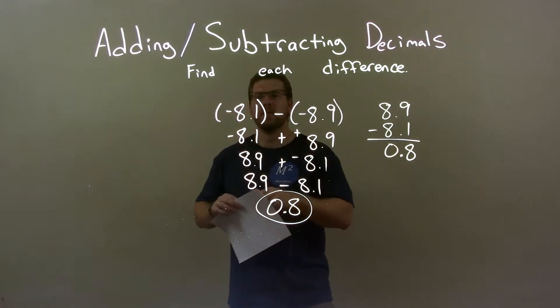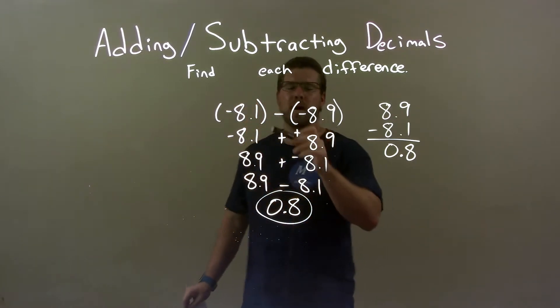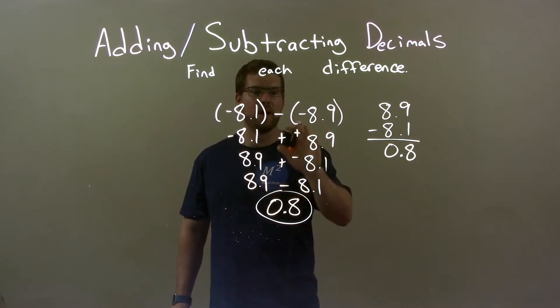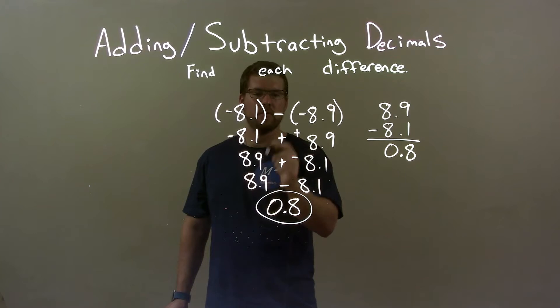So let's do a quick recap here. We're given negative 8.1 minus a negative 8.9. Well, I know that subtracting a negative is the same thing as adding a positive, so I did that. Then I rearranged it because I can put 8.9 first using our rules of addition.